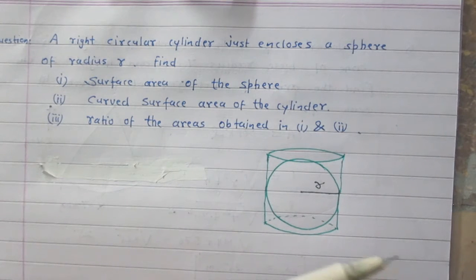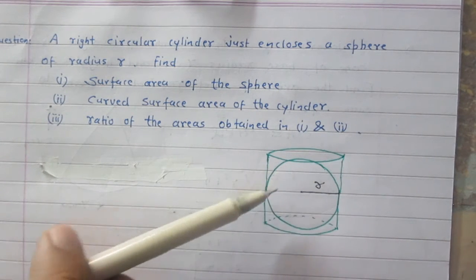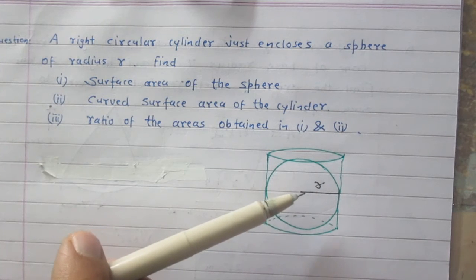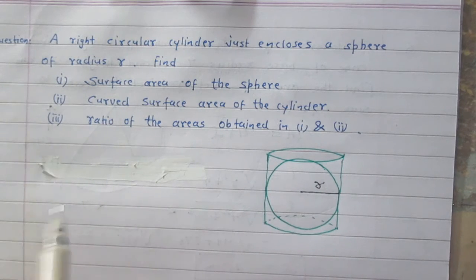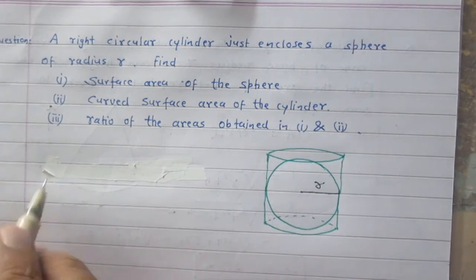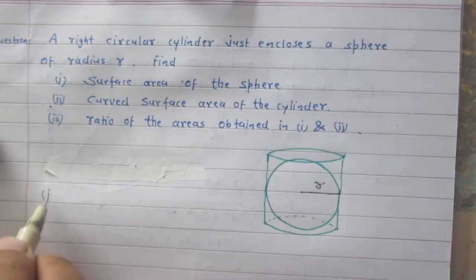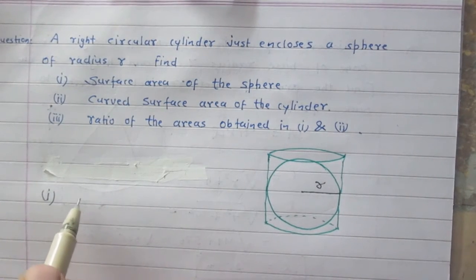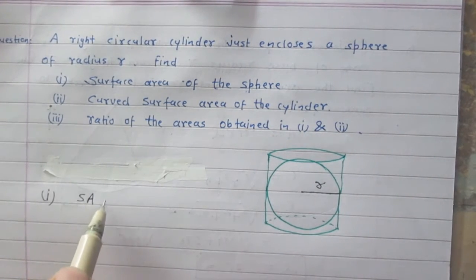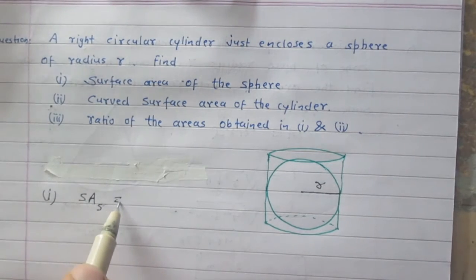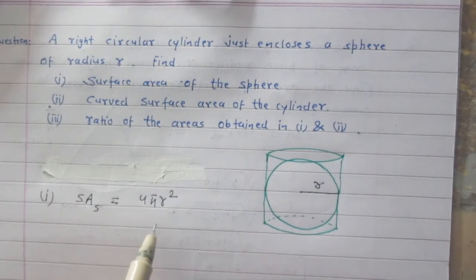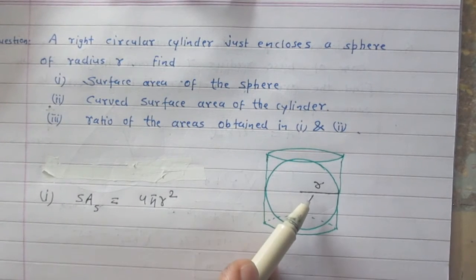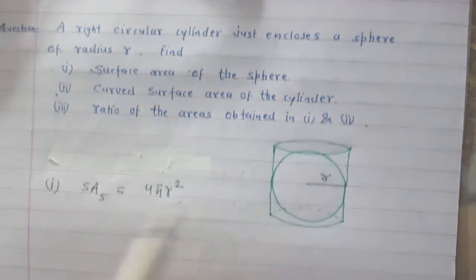We are given that a sphere is enclosed in a cylinder. The radius of the sphere is R. In part 1, we are asked to find the surface area of the sphere. Surface area of the sphere is 4πR², where R is the radius of the sphere.